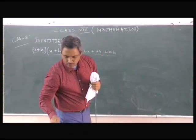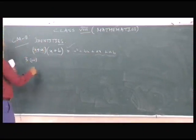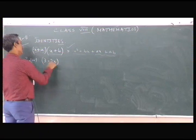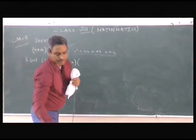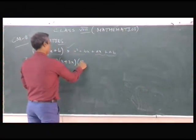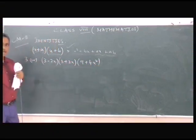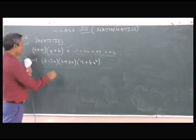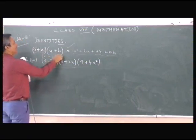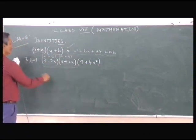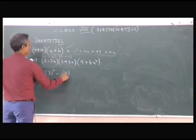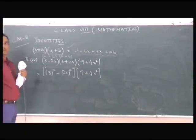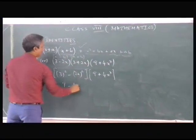Question 3, I want to do Part 4. The question is: (3 − 2x)(3 + 2x) into (9 + 4x²). Let us attempt this part by part. Using (a − b)(a + b) = a² − b²: for (3 − 2x)(3 + 2x) we get 9 − 4x². Then we have (9 − 4x²)(9 + 4x²), which remains to be worked out.